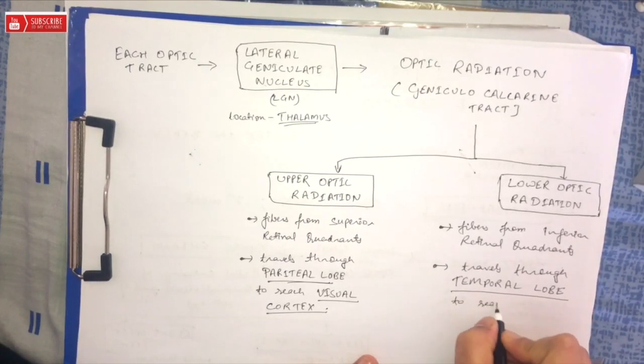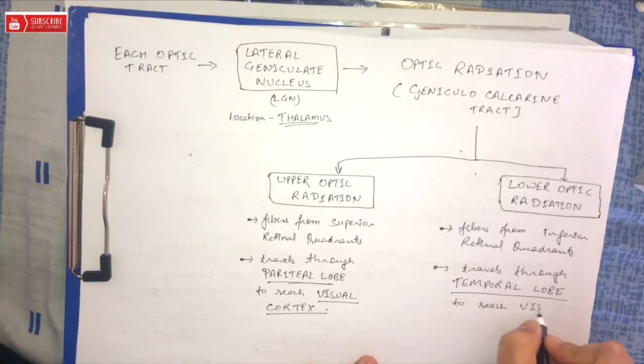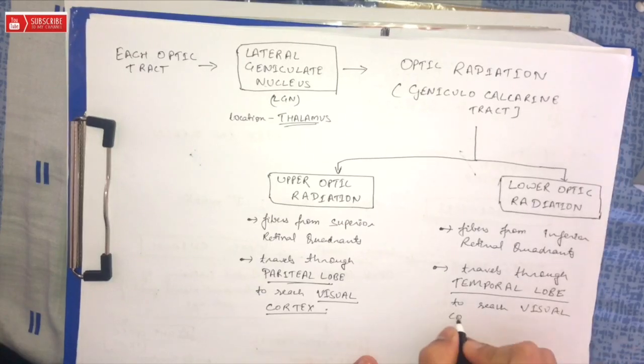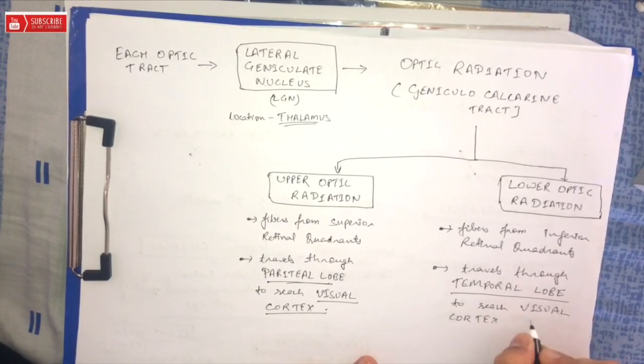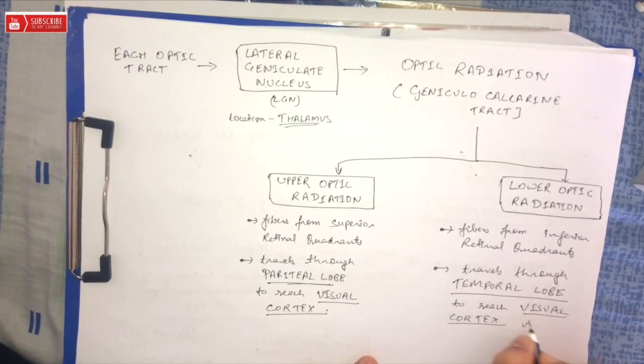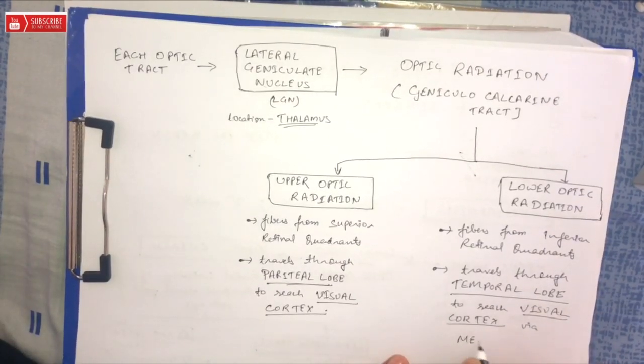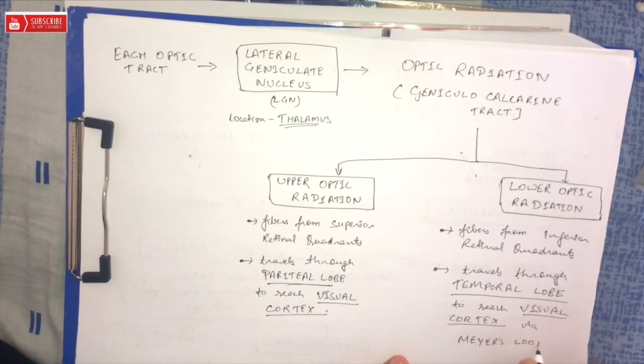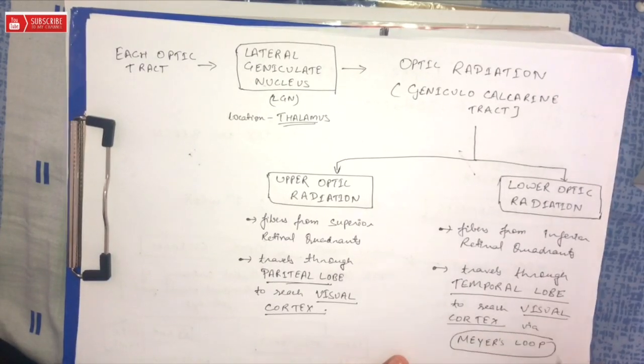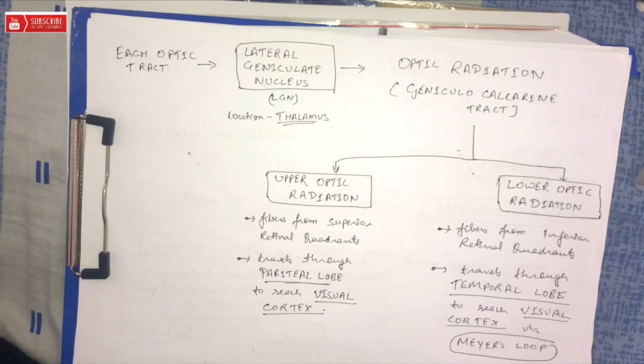It travels through the temporal lobe by a pathway known as Meyer's loop to reach the visual cortex. Once at the visual cortex, the brain processes the sensory data and responds appropriately.